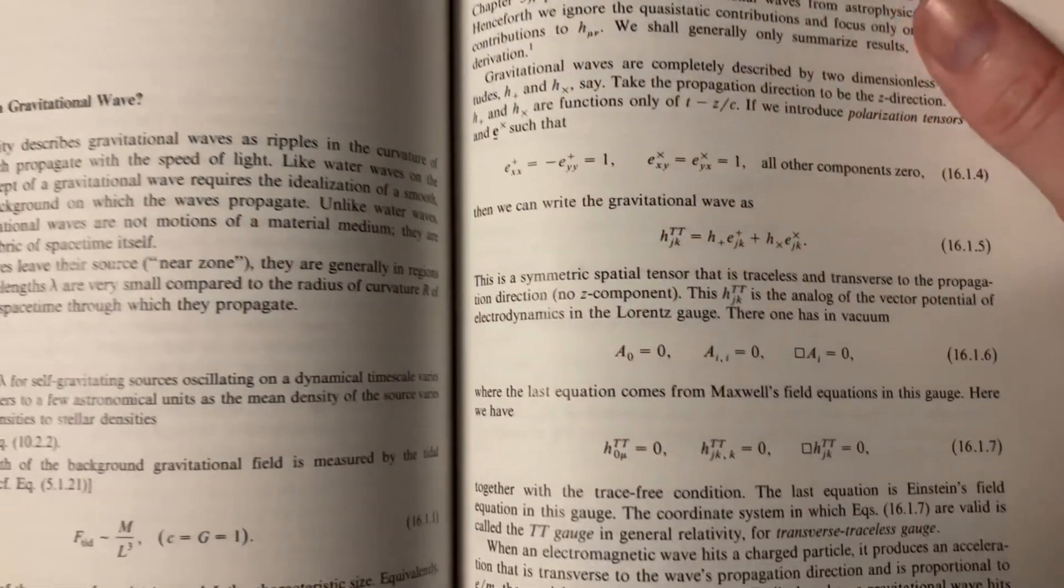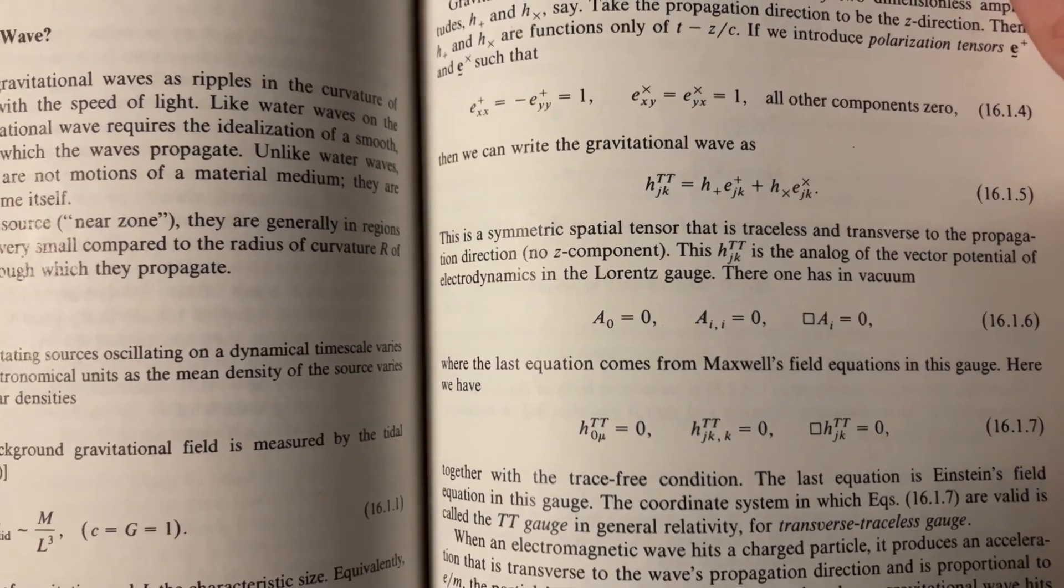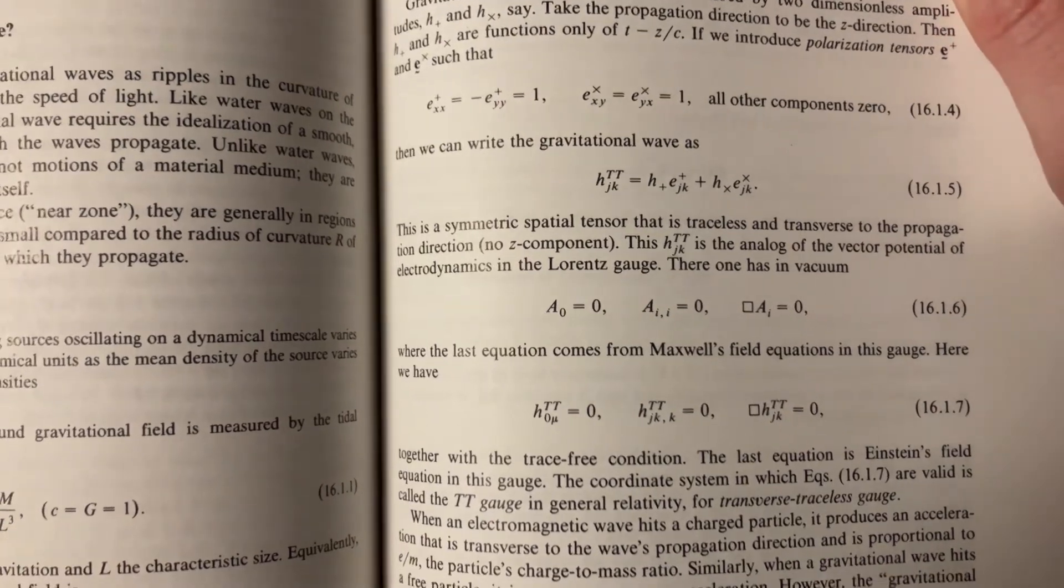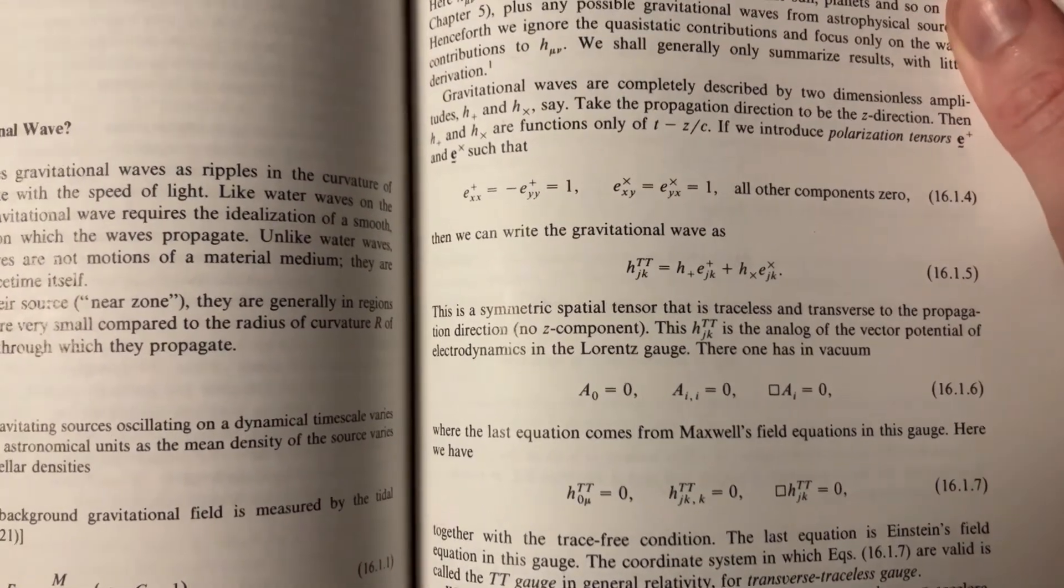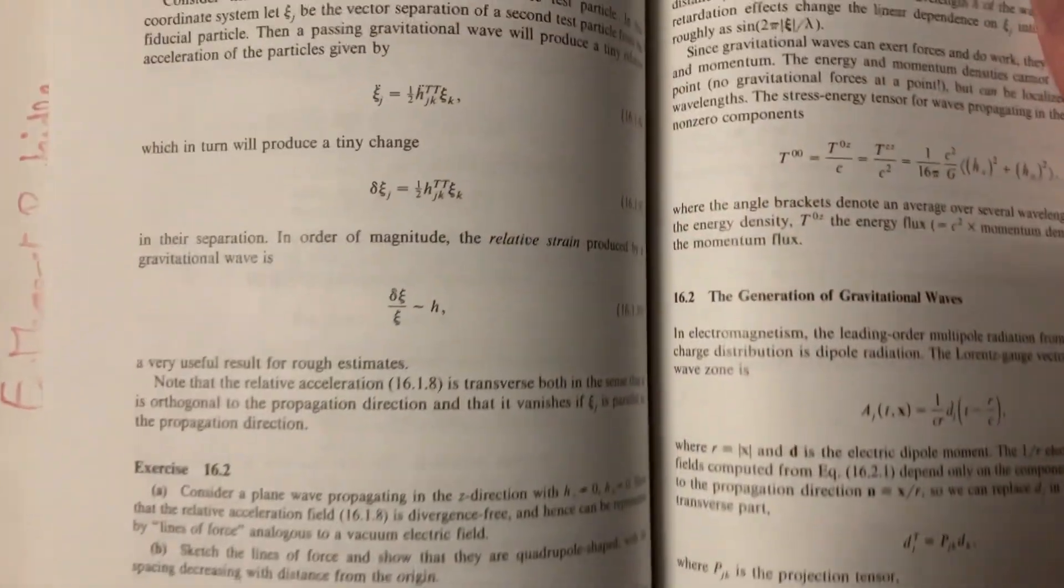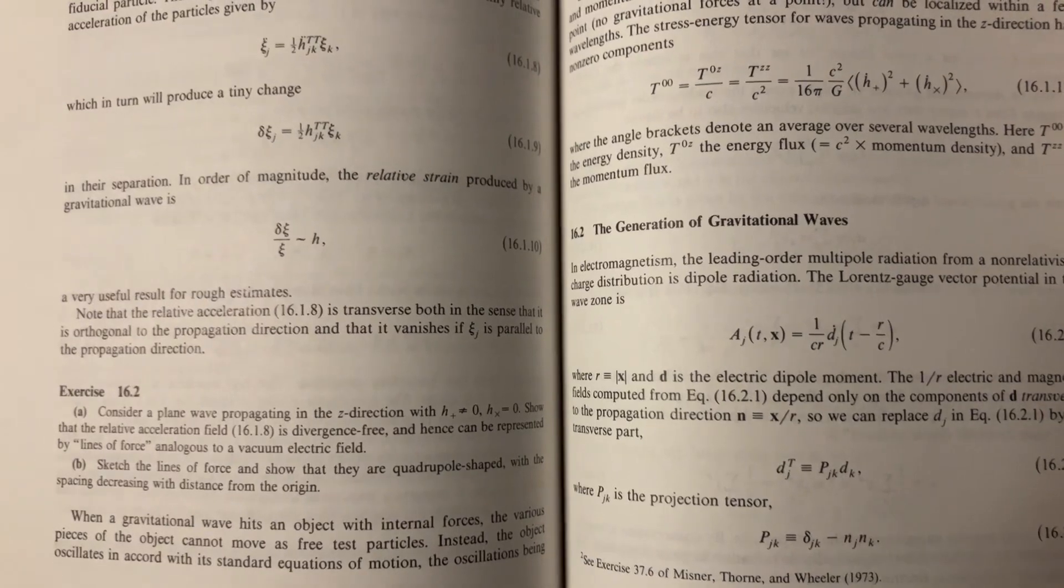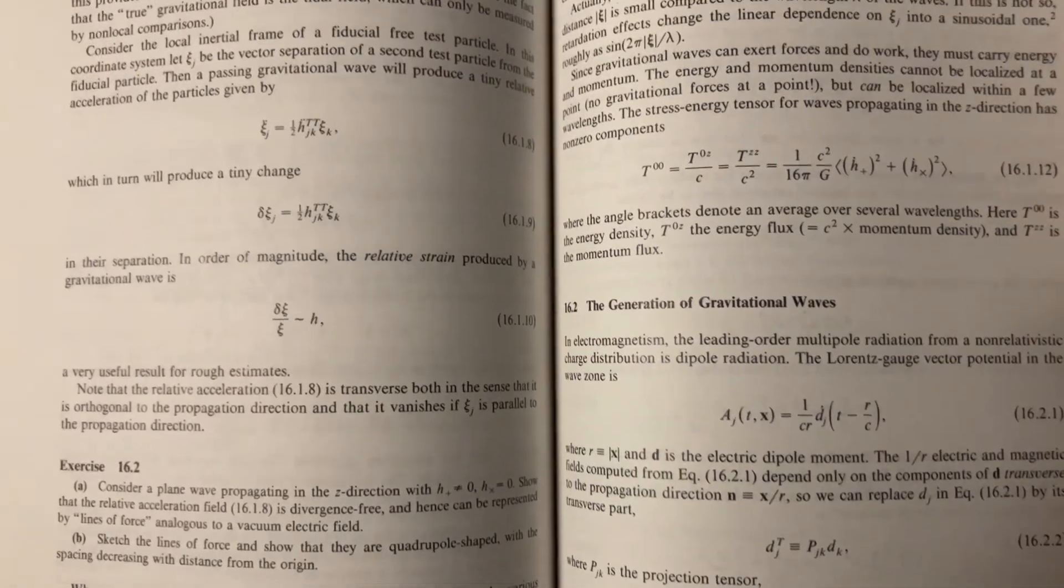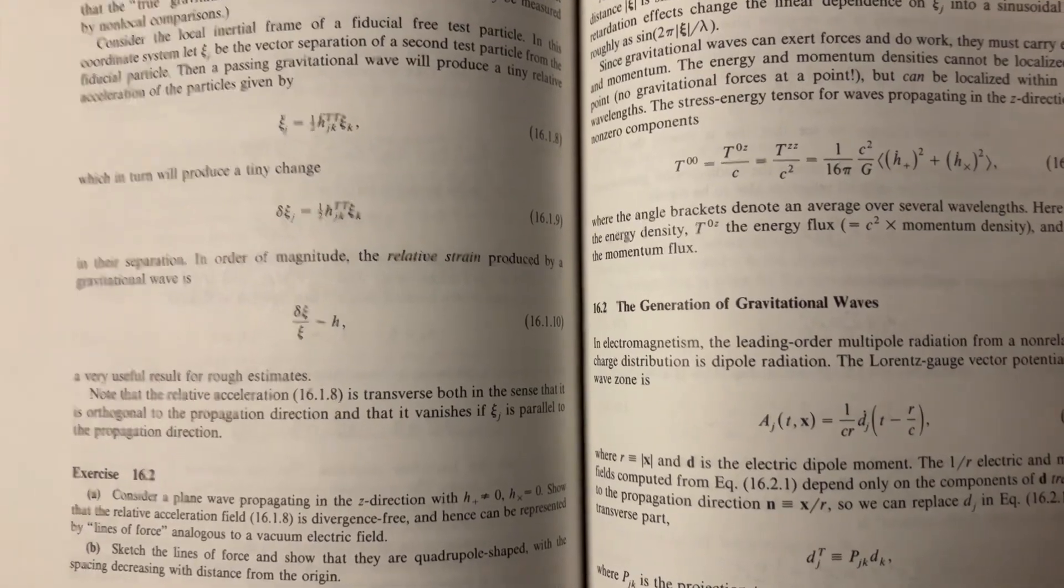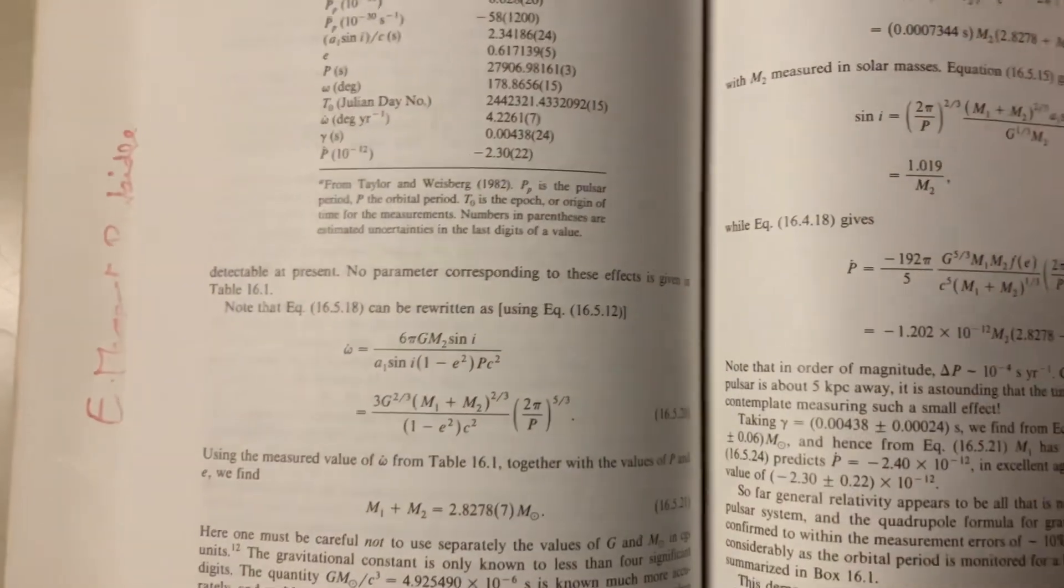Gravitational radiation. We're taking components of the metric tensor and stuff here. Doing like perturbations around them to make the gravitational waves. Oh my god. That's crazy. Relative strain produced by a gravitational wave. Wow. That is crazy. There's strain produced on space-time due to the gravitational waves. This is insane.